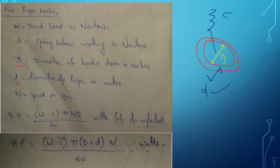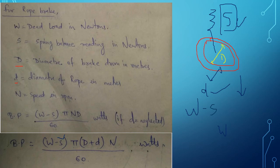The spring balance S balances the load on the instrument. Since W acts downward and S acts upward, the net effective load is W − S. Therefore, the final formula for brake power using a rope brake dynamometer is: BP = (W − S) × π × (D + d) × N / 60, in watts. Thank you for watching.